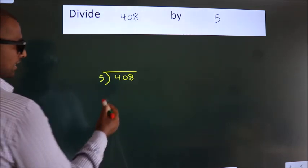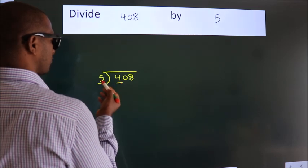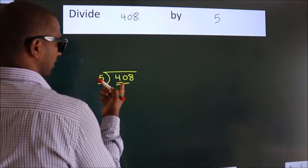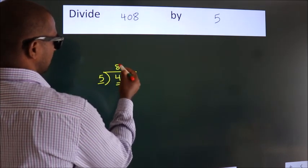Next, here we have 4, here 5. 4 is smaller than 5, so we should take 2 numbers: 40. When do we get 40 in the 5 table? 5 times 8 is 40.